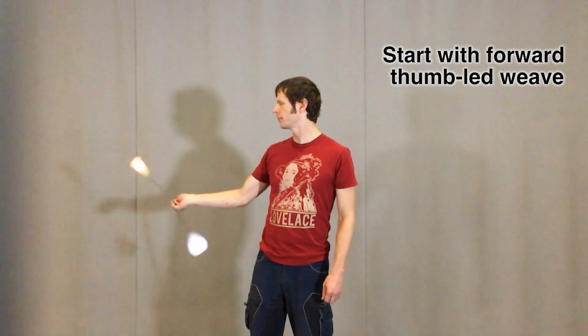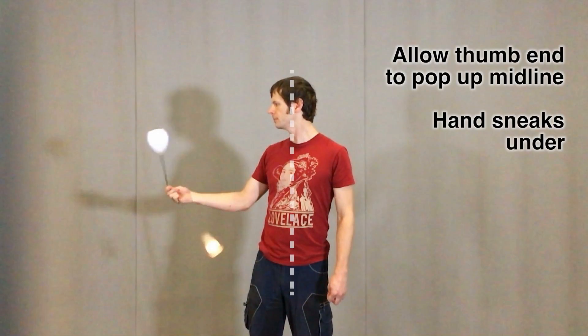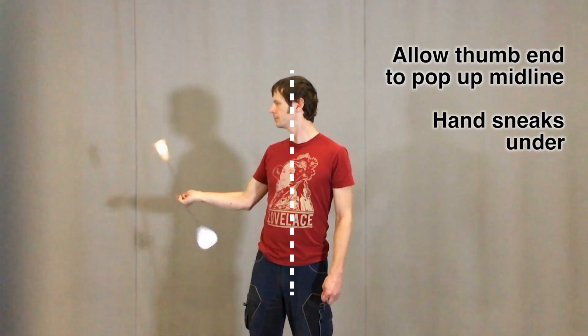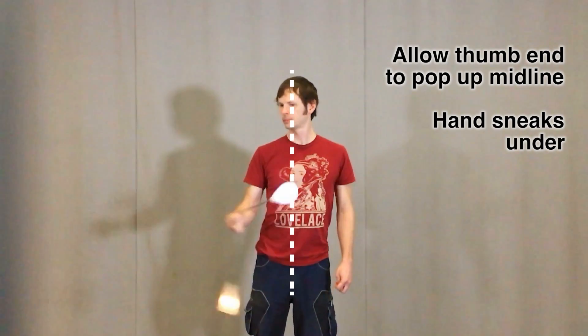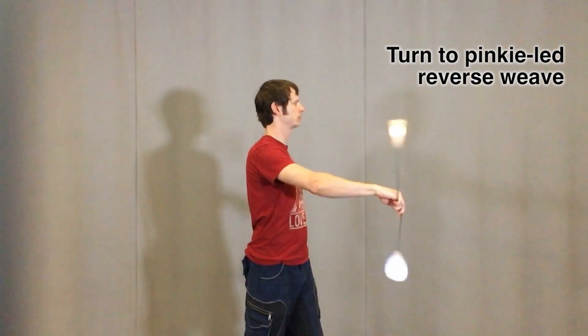We're going to begin by turning back and forth between our forward and reverse weaves in a waist strap. Start with a forward two beat in wall plane with your dominant hand over to its native side. You're going to wait for a moment when the thumb end is spinning up near your centerline and you're going to let it pop straight up while your hand sneaks underneath it. This is called a linear isolation and it allows you to switch your hand over to being pinky-led while moving it to the other side of your body.